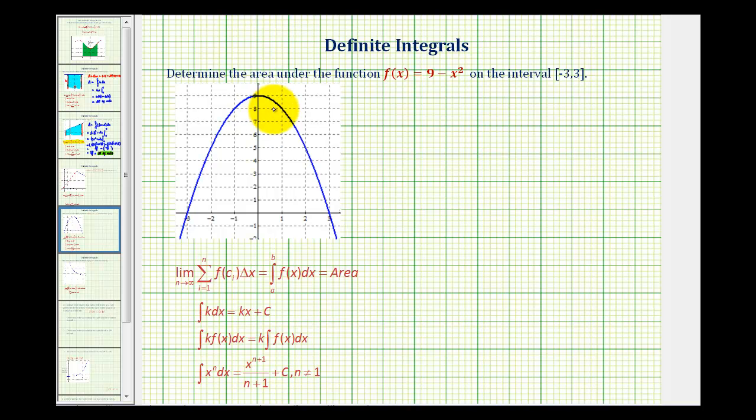We want to determine the area under the function f of x equals nine minus x squared on the closed interval from negative three to three.